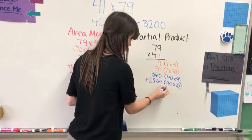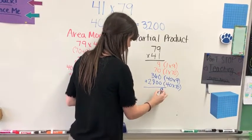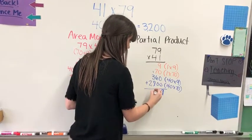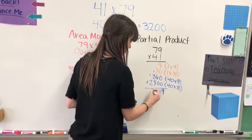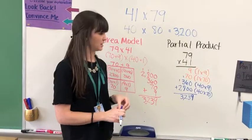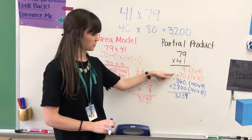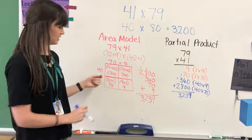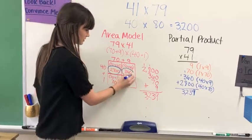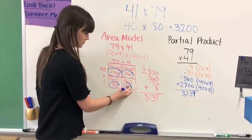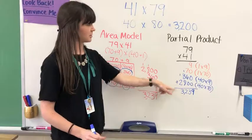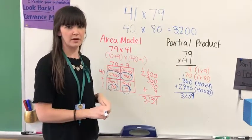If I add these partial products all together, I would get 3,239. You'll notice that these partial products have a lot in common with these partial products. We have the same answer and our answer is close, so our answer is reasonable.